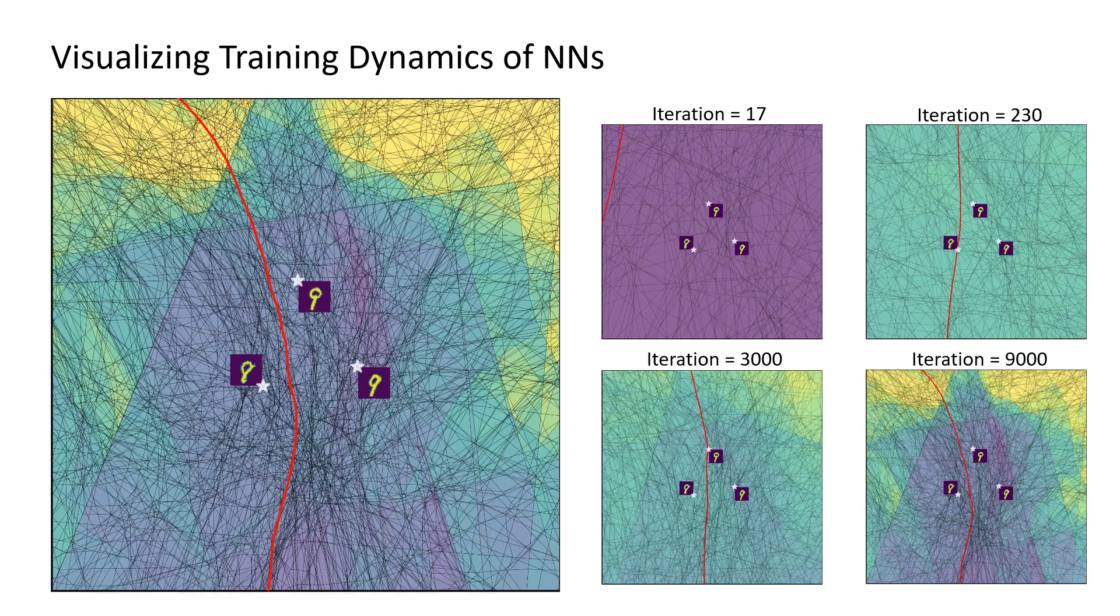Within the first couple iterations, the network learns a coarse decision boundary that is slowly fine-tuned as training progresses. The function learned in this region is also very flat initially. But as training progresses, we see both the function exhibiting changes in the per-region slope as well as the decision boundary getting more curved.